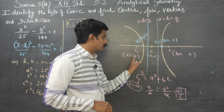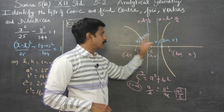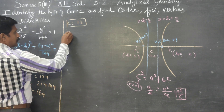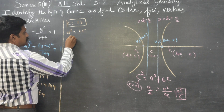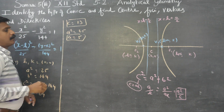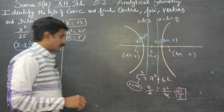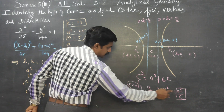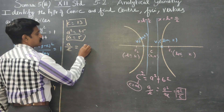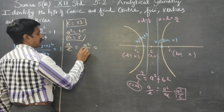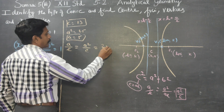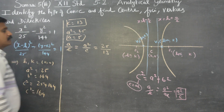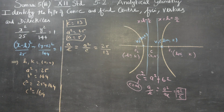After finding c, a² is equal to 25, so a is equal to 5. Then a/e equals a²/c. What is my a²? It is 25. What is my c? It is 13. So a²/c = 25 by 13.